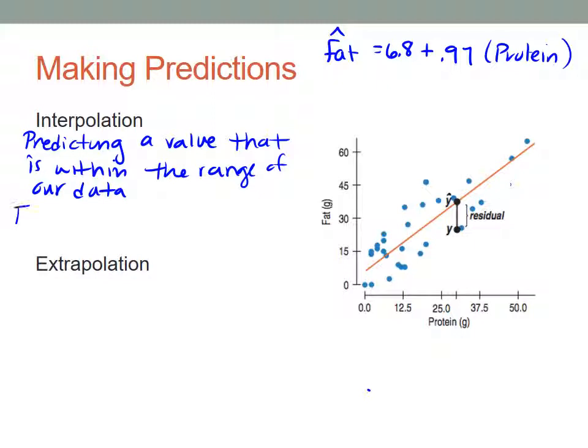In order to do that, I'm just going to plug in my value: fat hat equals 6.8 plus 0.97 times 45. Then just simplify the side and you get your predicted fat content to be 50.45.